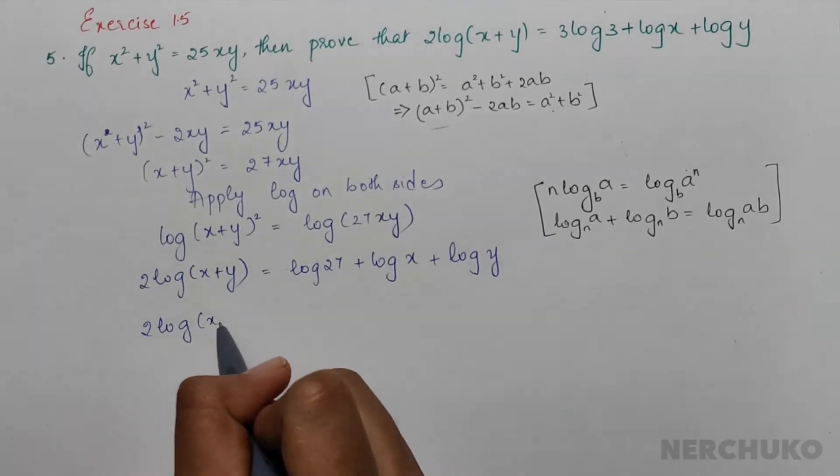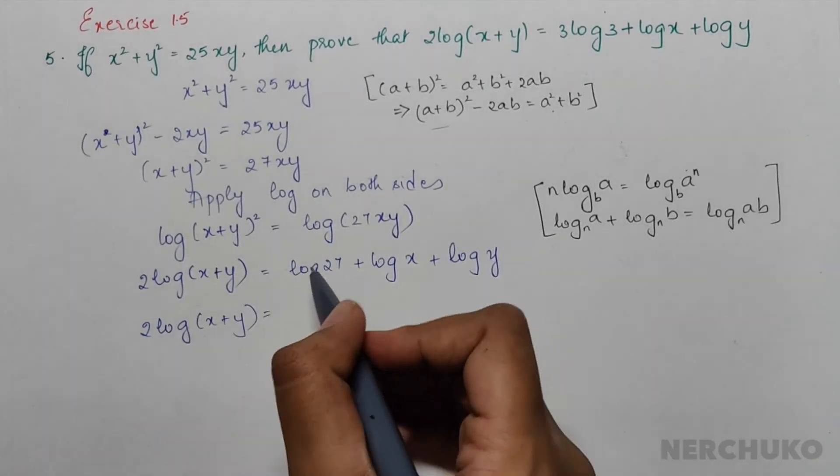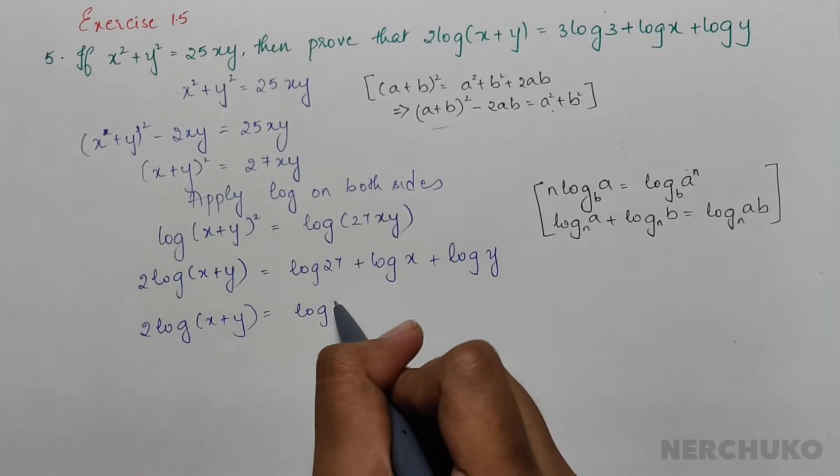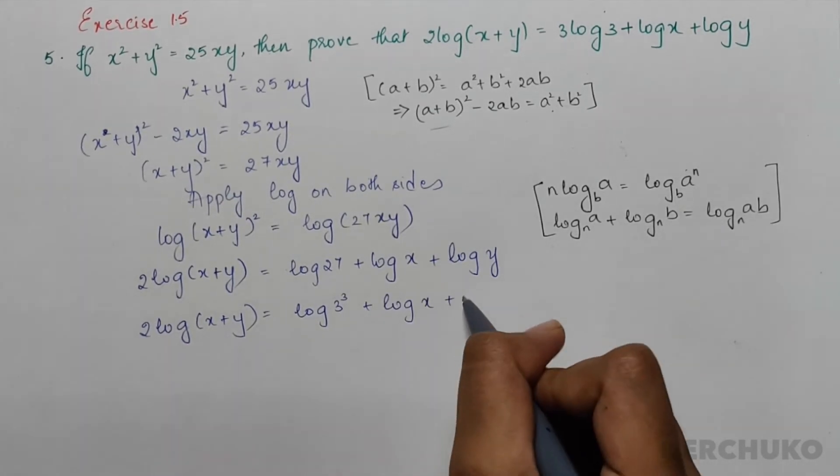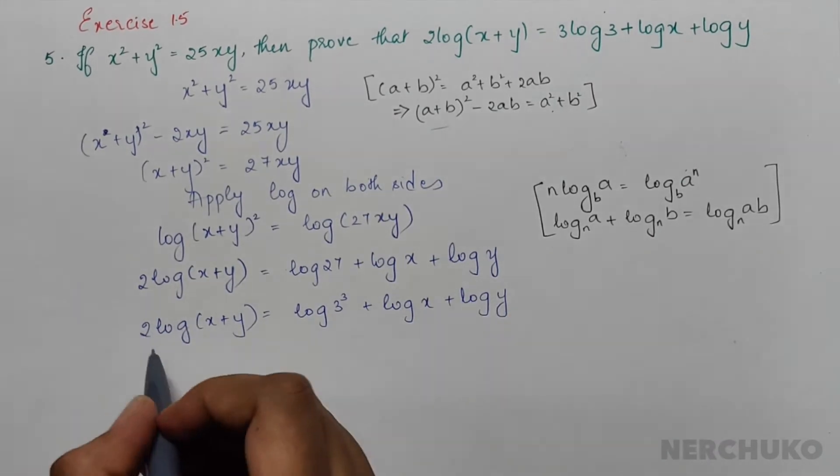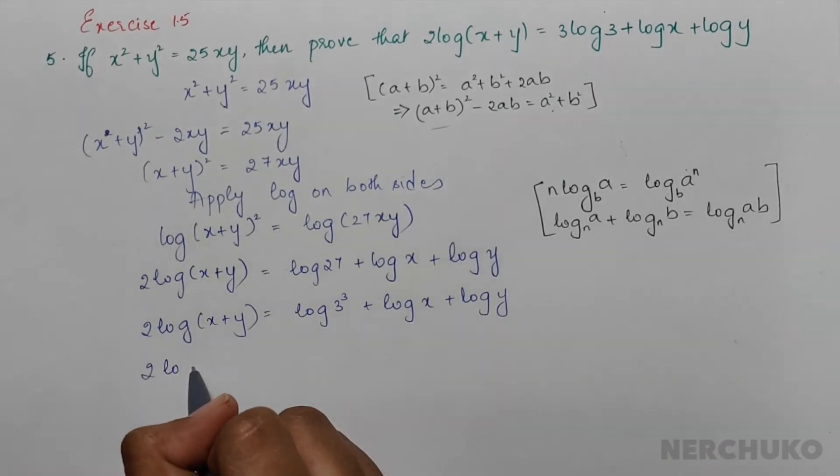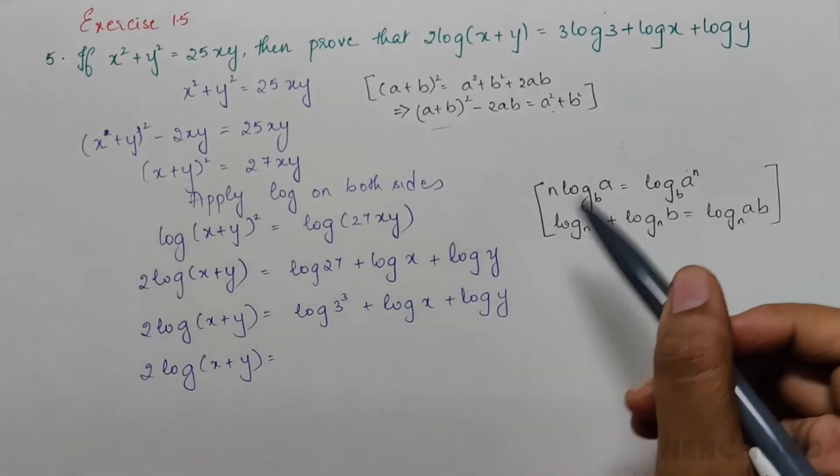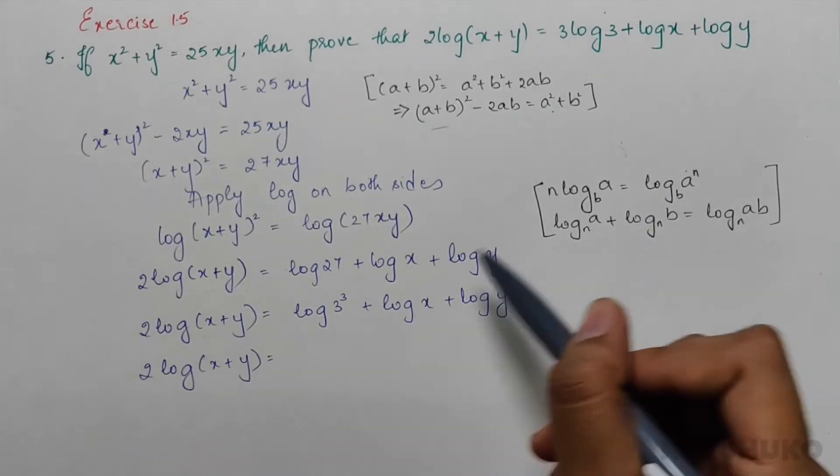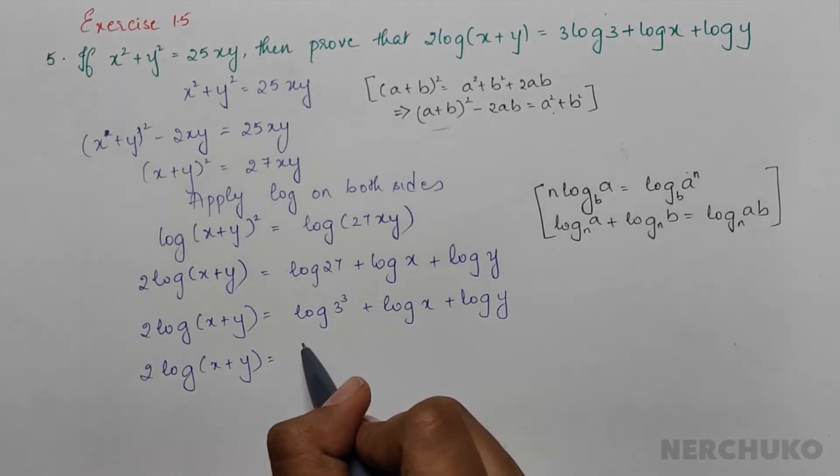2log(x+y) = log(3³) + logx + logy. Since 3³ is a power, I will apply the formula to get 3log3 + logx + logy.